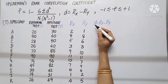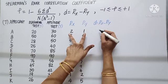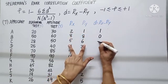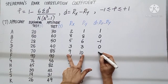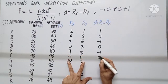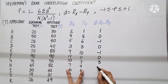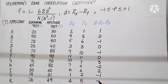Now let us find out D, which is Rx minus Ry. As we subtract: 2 minus 1, 8 minus 8, 5 minus 6, 3 minus 3, 9 minus 10, 11 minus 11, 10 minus 7, 7 minus 9, 6 minus 4, 1 minus 2, and 4 minus 5.